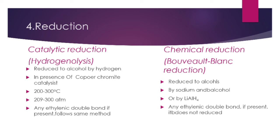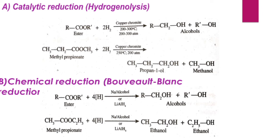The fourth reaction is reduction, divided into catalytic reduction (hydrogenolysis) and chemical reduction (Birch reduction). In catalytic reduction, esters are reduced to alcohols by hydrogen in the presence of a copper chromate catalyst at 200–300°C and 200–80 atm pressure. For example, methyl propionate is reduced to propan-1-ol and methanol by H₂ with a copper chromate catalyst at 250°C and 200–80 atm.